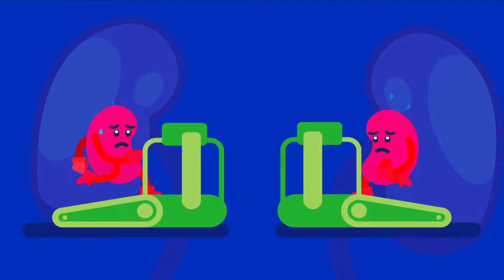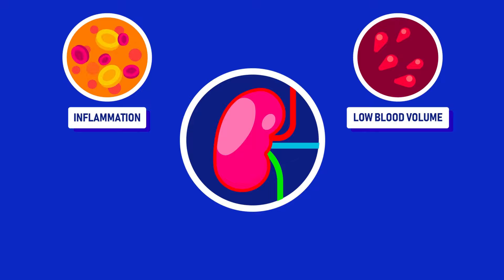Kidney failure happens when one or both kidneys stop functioning normally. This could be due to infections, urine elimination problems, or some underlying diseases.